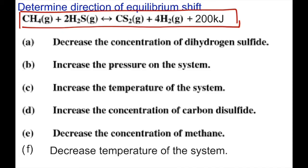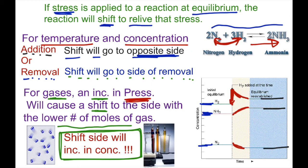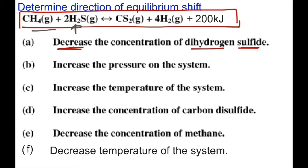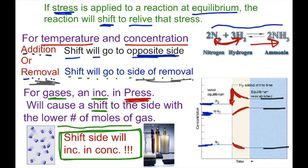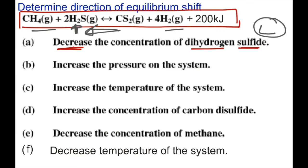In problem A, we are decreasing or removing dihydrogen sulfide, H2S, which is on the reactant side. When we remove it, by our rule, the shift will go to the side of removal — so the shift goes to the left. When the shift goes to the left, everything on the left will start to increase. The reaction shifts left to create more H2S, and it will also make more CH4. So both CH4 and H2S concentrations will increase.